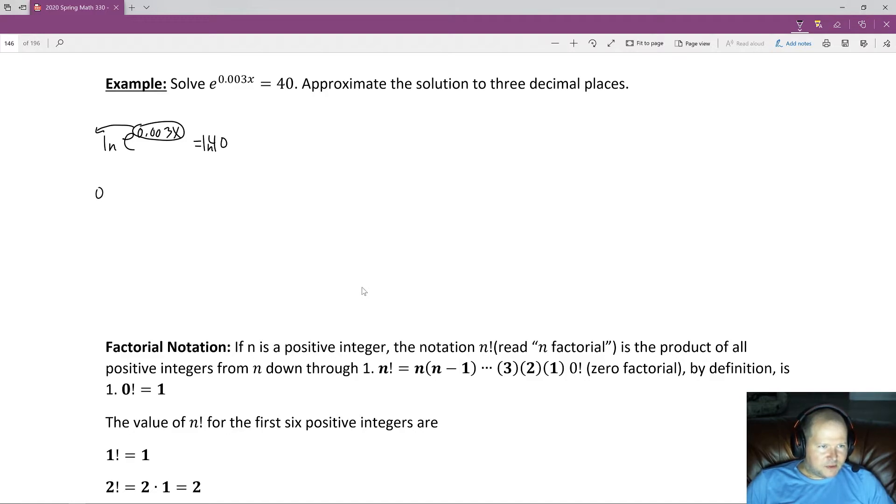And that gives me 0.003x equals, let's put in that extra step there just to make sure, the natural log of e equals the natural log of 40. Now, the natural log of e is simply 1. So it just goes away because 0.003x multiplied by 1 is just 0.003x. So we end up with 0.003x is equal to the natural log of 40.